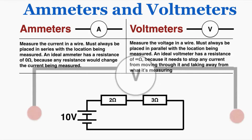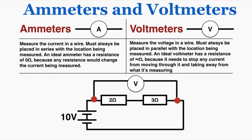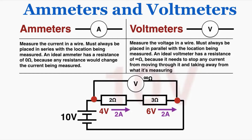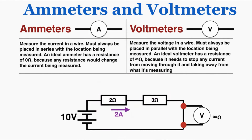We can measure any region with a voltmeter. For example, placing it across both the 2 ohm and 3 ohm resistors measures the voltage drop across both. With 2 amps of current, the voltages are 4 and 6 respectively, so the total is 10 volts — confirmed because those two resistors in series add up to 10. If we place the voltmeter on the wire with no resistors, there is no voltage drop there, so the voltmeter would read zero volts.